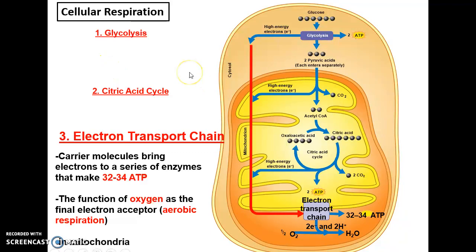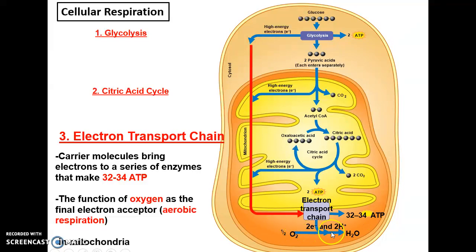The electron transport chain occurs within the inner membrane of the mitochondria. Various proteins use the energy in those high-energy electrons carried by specific molecules and form a proton gradient that leads to the production of huge amounts of ATP. This is also where oxygen is used and turned into water — making this the aerobic part of cellular respiration.